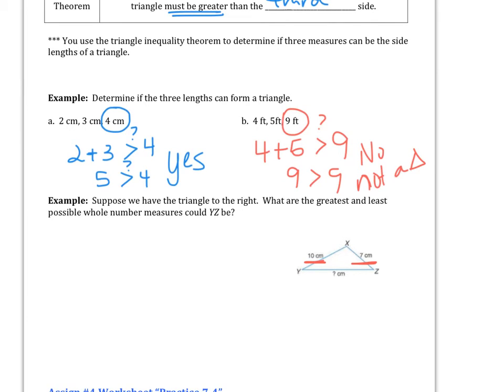So in order to do that, we're going to take those two numbers and first we're going to subtract them. So 10 minus 7, that answer is 3. And then we are going to add those numbers. 10 plus 7, that answer is 17. So the least possible number or length that that third side could be would be 3. Well, that has to be greater than 3 but less than 17.